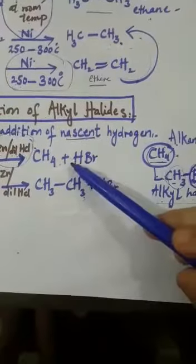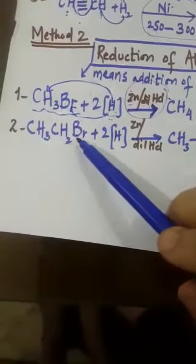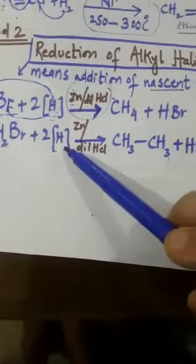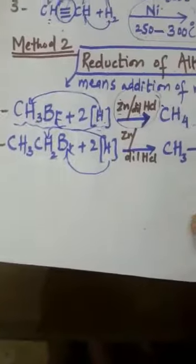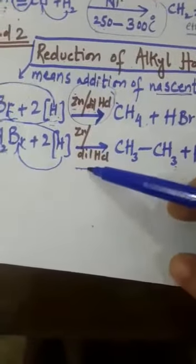You can see CH3, which forms CH4 plus hydrogen bromide. You can see ethyl bromide with hydrogen addition. So what happens? One hydrogen will add.